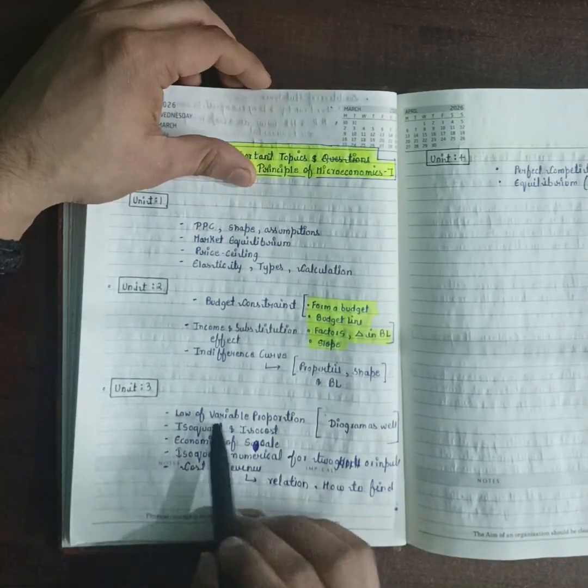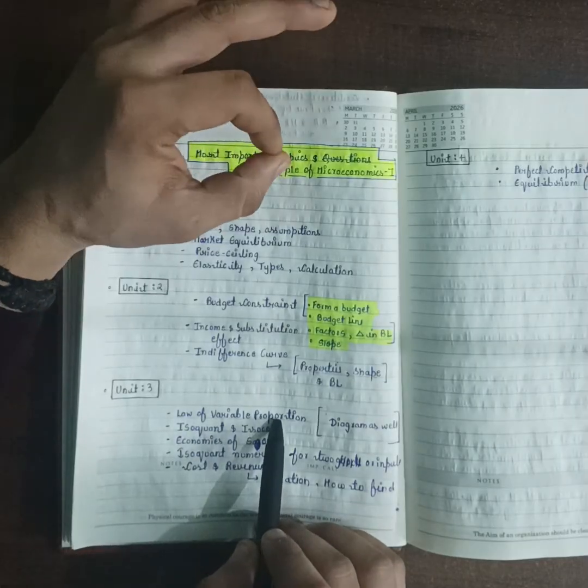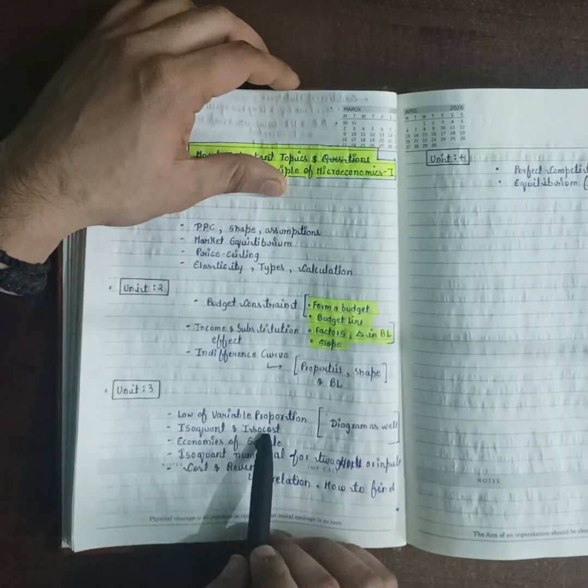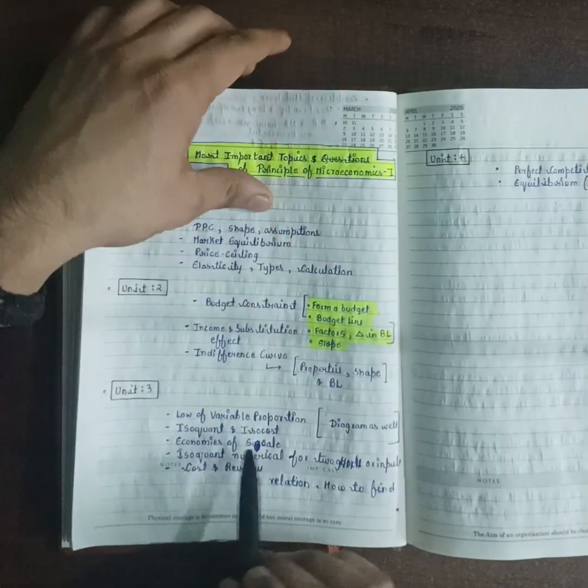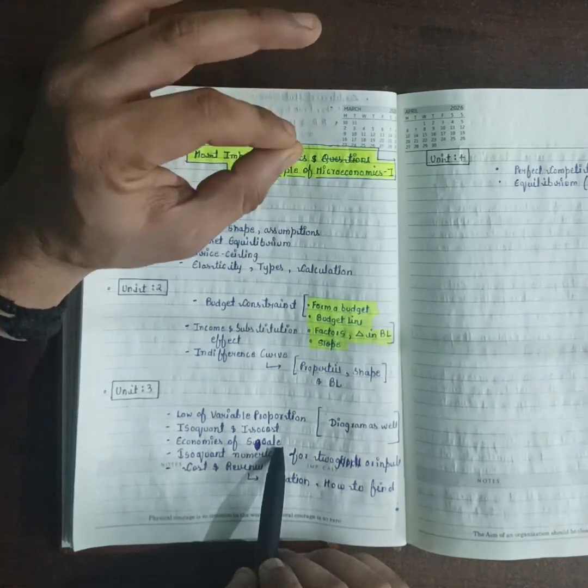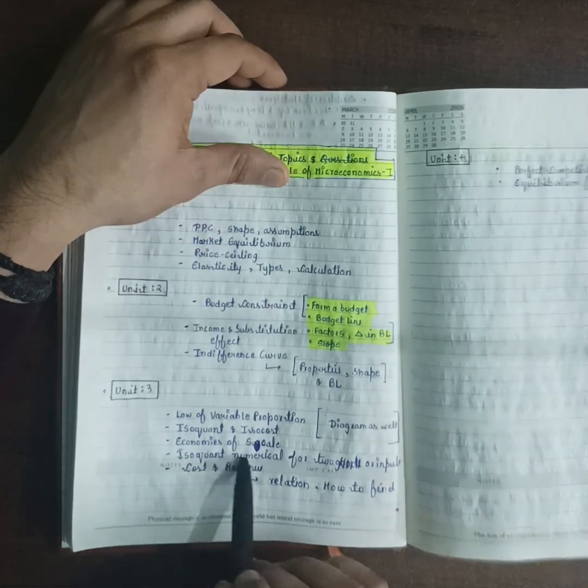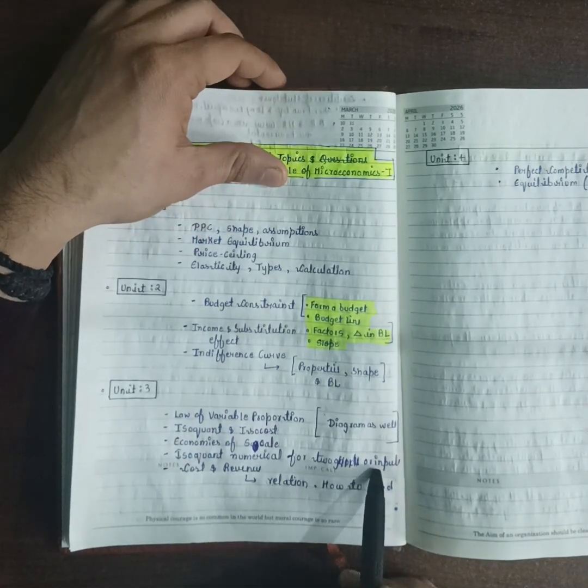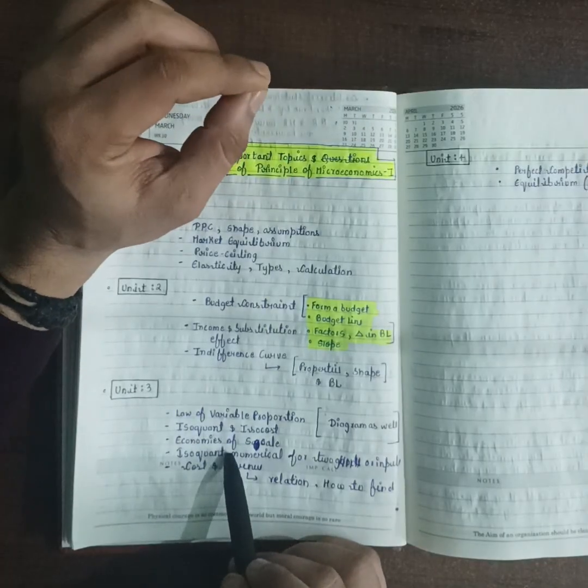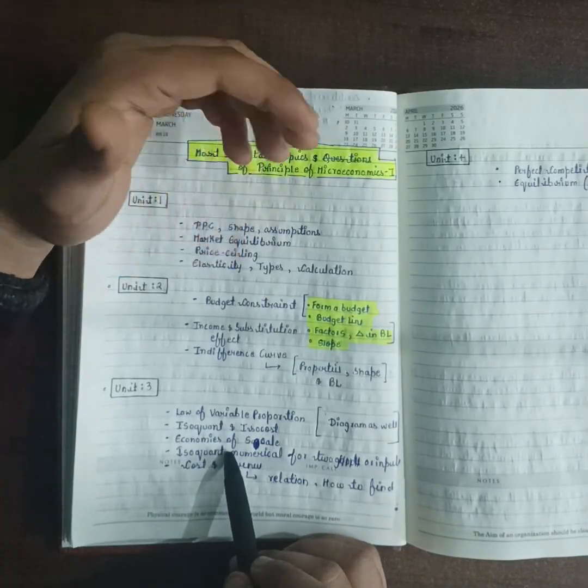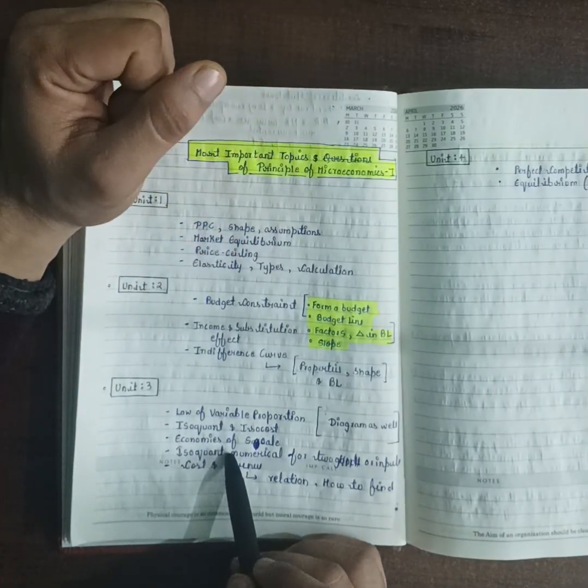In Unit 3: law of variable proportion - one of the most important topics. Isoquant and isocost - one question is absolutely coming. Economies of scale - very important theoretical question. Isoquant numerical for two inputs - this topic is very crucial.